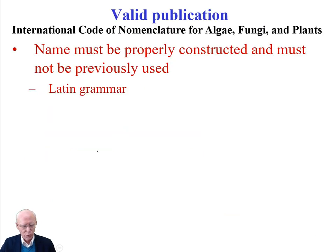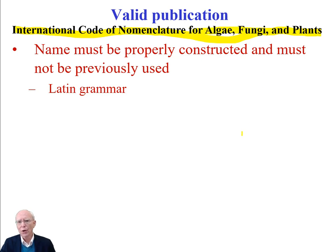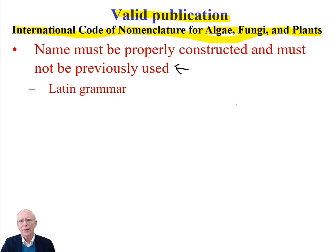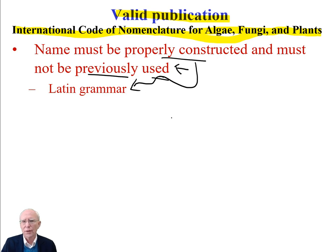So you've got to follow these rules. These rules were laid down in a document called the International Code of Nomenclature for Algae, Fungi, and Plants. The rules for valid publication — rules you have to follow in order to get your work taken seriously — are laid down in this document. The first part of that code says that your name has to be properly constructed and not previously used. No one else could have used that name before, and it has to be in Latin grammar.